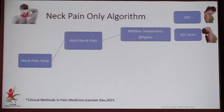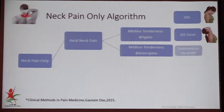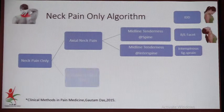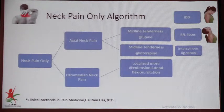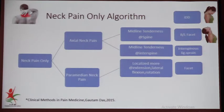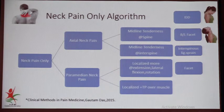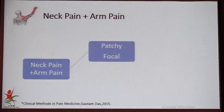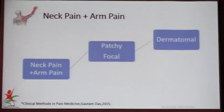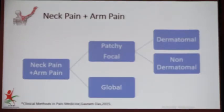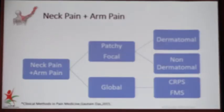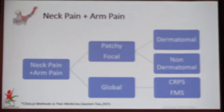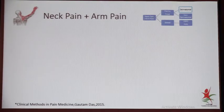For neck pain with arm pain, there are two categories: dermatomal and non-dermatomal. Non-dermatomal global distribution suggests CRPS, fibromyalgia syndrome, or hypothyroidism. For the dermatomal pattern, there are three diagnoses to consider: disc with radiculopathy, post-herpetic neuralgia, and diabetic mononeuropathy.